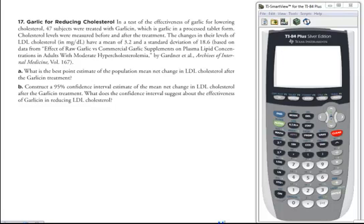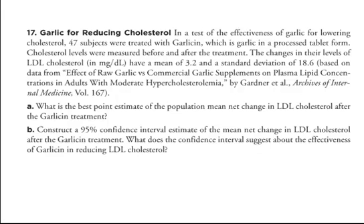In this video we're going to look at an example that requires us to construct the confidence interval for the mean, and we're also going to look at how we can use our calculator to help us do that. So in this problem, in a test of the effectiveness of garlic for lowering cholesterol, 47 subjects were treated with garlicin, which is garlic in a processed tablet form.